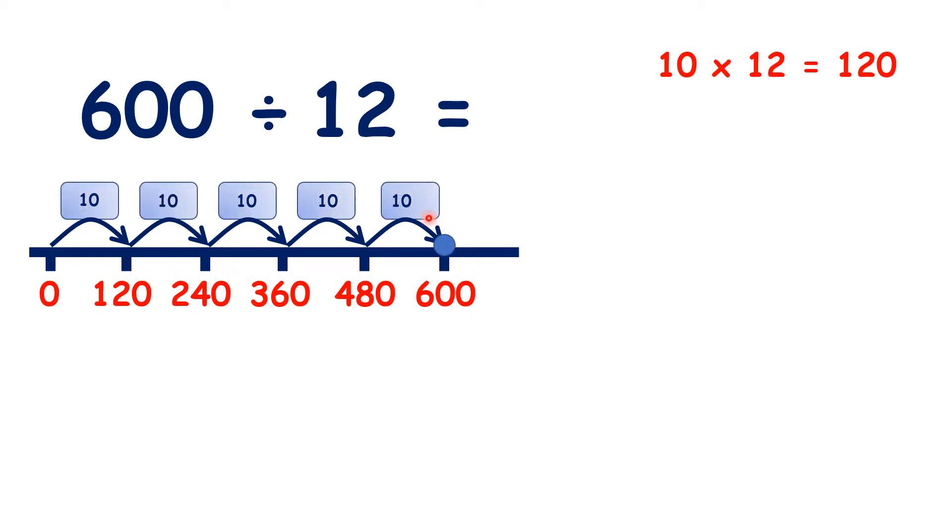So because we counted 5 steps of 10 times 12, we really counted 50 steps. So 600 divided by 12 is 50.